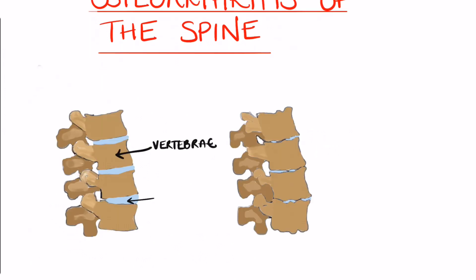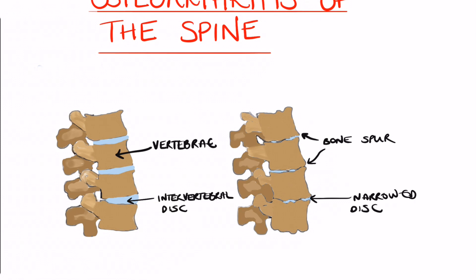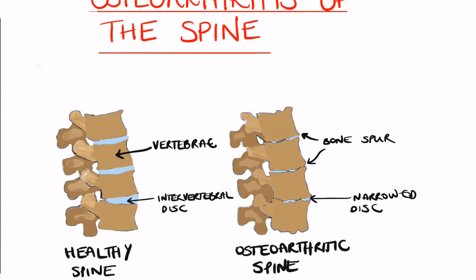You can see here the comparison between a normal spine and the osteoarthritic spine. In the osteoarthritic spine there is degeneration of the intervertebral disc and also bone spurs or osteophytes, which are characteristic of osteoarthritis.